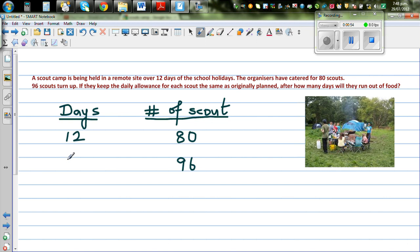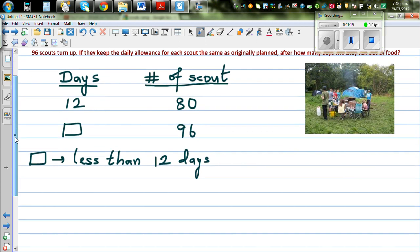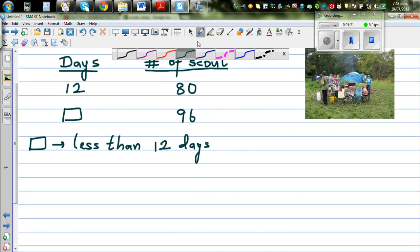This answer should be something less than 12. So one thing you understand logically, as more scouts come, the food will run out quicker. So this would be less than 12 days. So let me explain one very interesting relationship in inverse proportion.